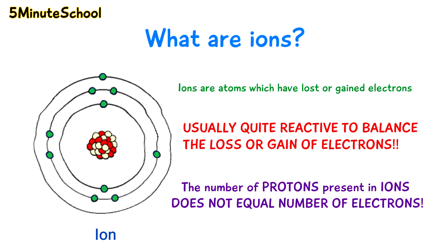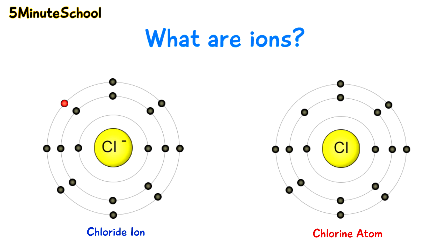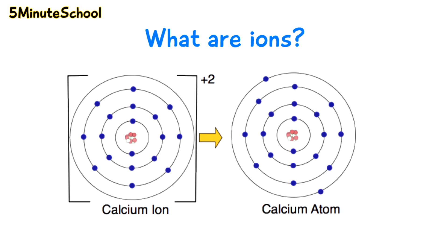For example, the chloride ion has one more electron than protons. The calcium ion, which is Ca2+, has two less electrons than protons.